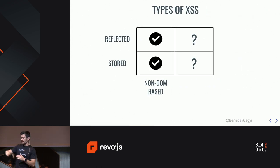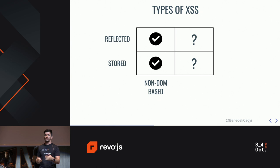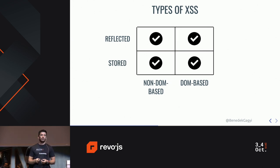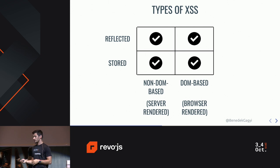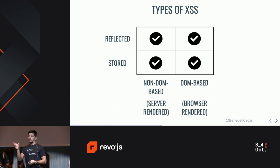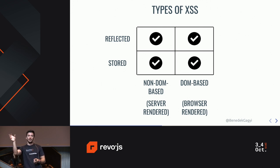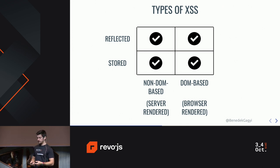These are the two kinds in the horizontal dimension. The vertical dimension is also interesting. Basically, you can have non-DOM-based and DOM-based attacks, which, if you simplify it, are server-rendered and browser-rendered. The example I just told you is a server-rendered example. But if that parameter is not sent as a request parameter but more like part of a fragment — so it doesn't even travel to the server — the JavaScript inside the page can still take something from the URL, render it to the page, making it run and becoming harmful.